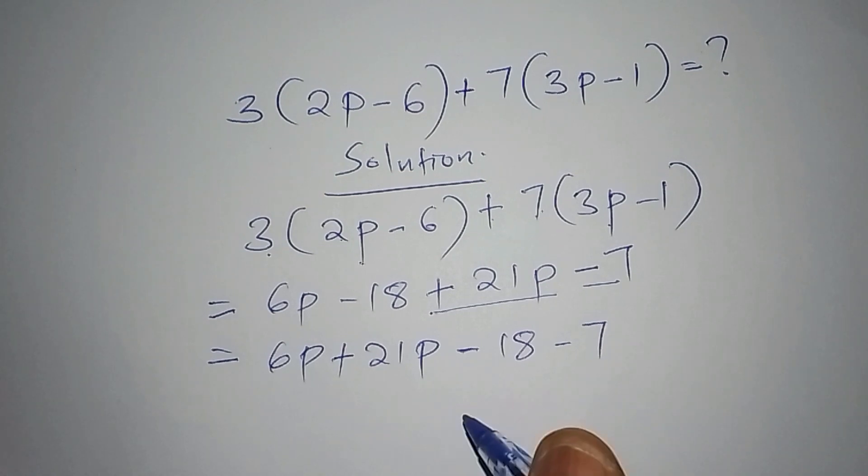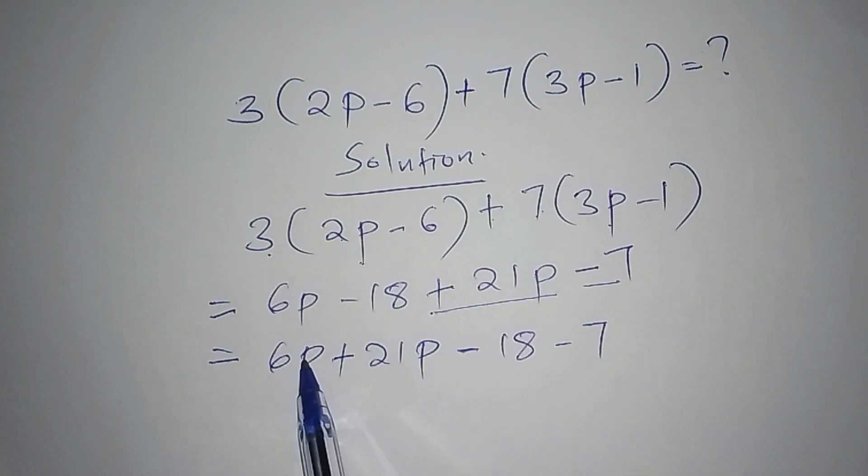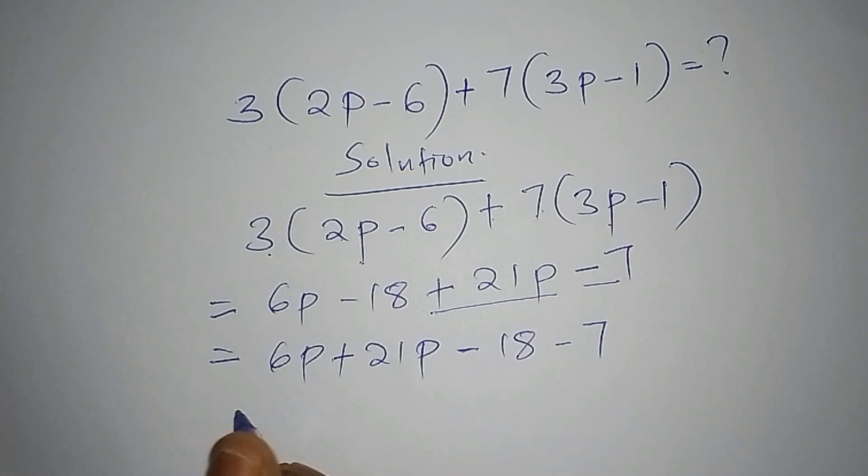Then the next step is now to work out the p's, that is 6p add to 21p, and then now we shall have 27p, we shall have 27p.